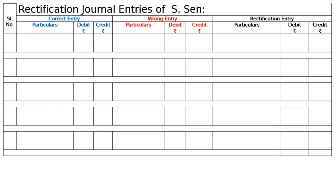The question is: the trial balance of S-SEN did not agree, and the difference in the books was carried to a suspense account. Pass the entries required to rectify the following errors which accounted for the difference. Also, prepare the suspense account.